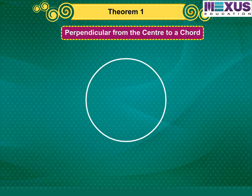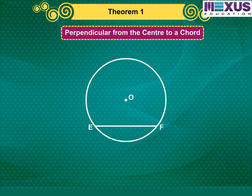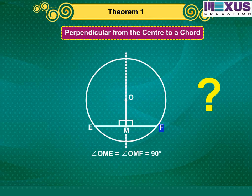Let us draw a circle. Let O be the center. Draw a chord, EF. Draw a perpendicular line OM on the line EF. Then angle OME is equal to angle OMF which is 90 degrees, or OM is perpendicular to EF. Now if we fold the paper through line OM, do you think the point F will coincide with E? Yes it will. Hence, ME will be equal to MF.